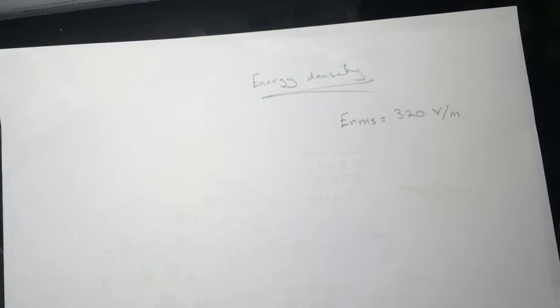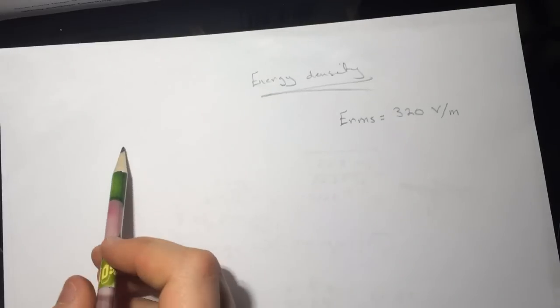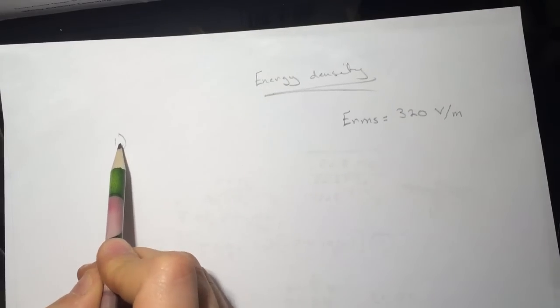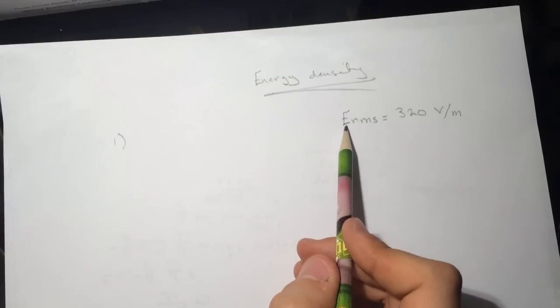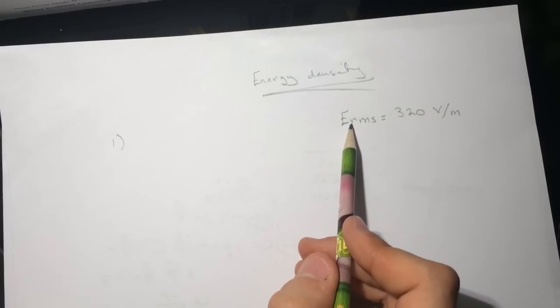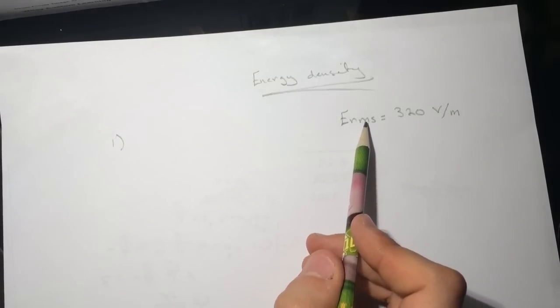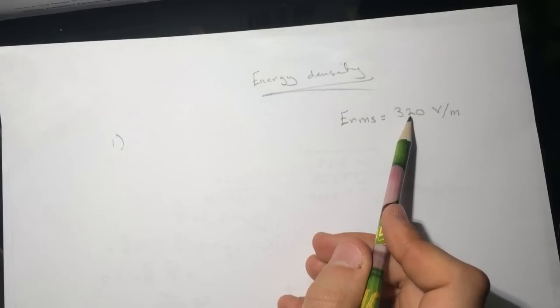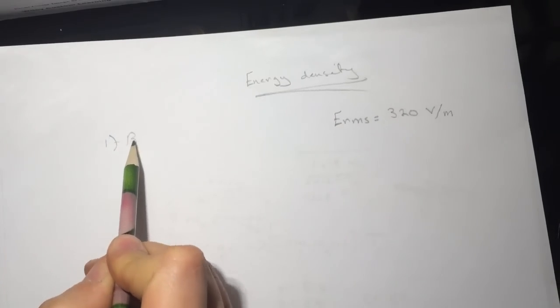Hi guys, this is a smart physics tutorial for energy density. This is an easy one, so let's go through it very quick. They give us the electric field RMS, root mean square, 320 V/m, so they're asking for B_RMS.